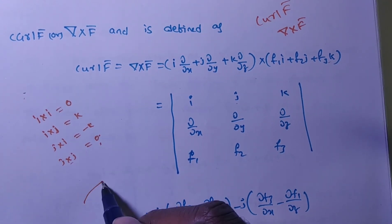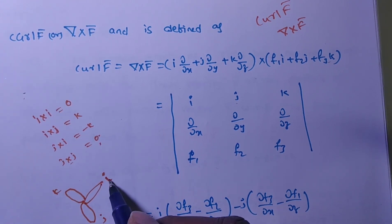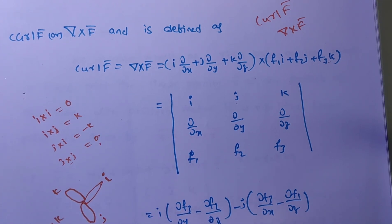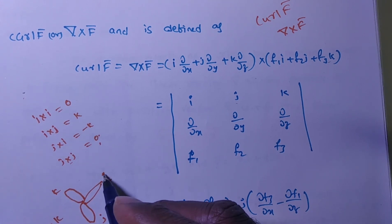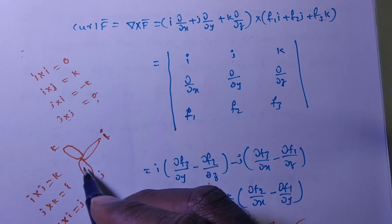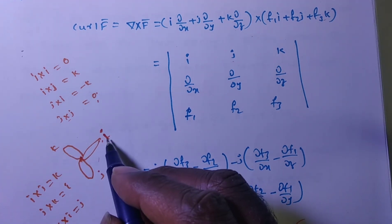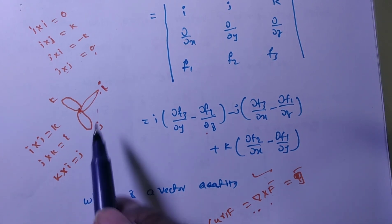Suppose this is a fan. This is i, this is j, this is k. Now i falls on j — the outcome is k, because i cross j equals k. Then j falls on k — that is rotation. If j is rotated to k, then k falls on i, and if k reaches i, then i reaches j. That is one full rotation cycle. If i makes three full rotations and falls back on i, then i cross i is zero. So sometimes del cross f̄ is also zero. If del cross f̄ is zero, there is no rotation.